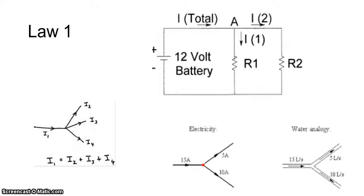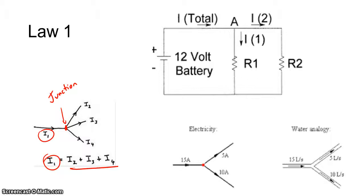The first law says the current into the junction — this is called the junction, when current splits — is equal to the current out of the junction. So 15 is equal to 5 plus 10.